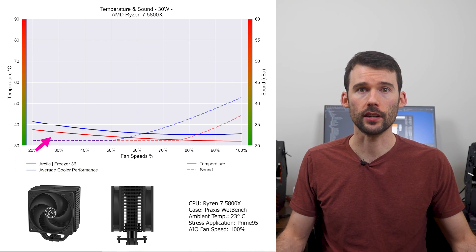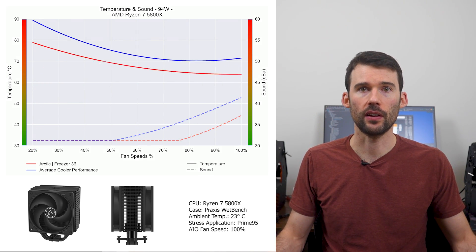At idle, the Arctic Freezer 36 in red does materially better than the average cooler in blue. As we turn up the heat to 105 watts, we can see that the cooler's advantage widens.